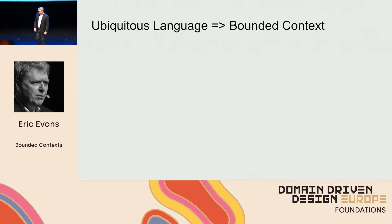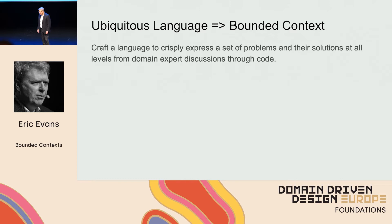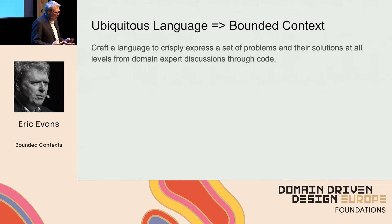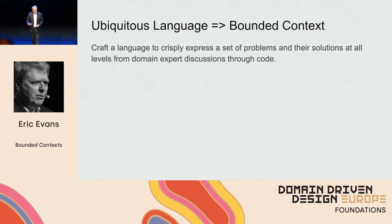One way of looking at it, and I think my preferred way, is that bounded context is a natural implication of the ubiquitous language pattern. The ubiquitous language pattern basically says that when we approach modeling a domain, we're going to try to create a language — a way that we can clearly, concisely express the problems we're trying to address, and the way we're going to solve them. That goes hand-in-hand with a clear model.